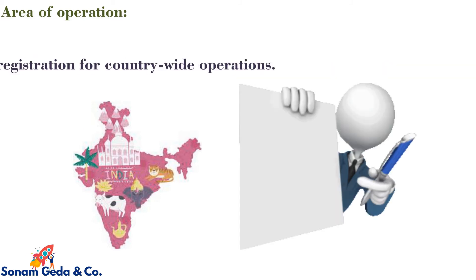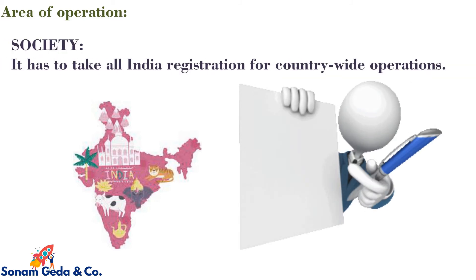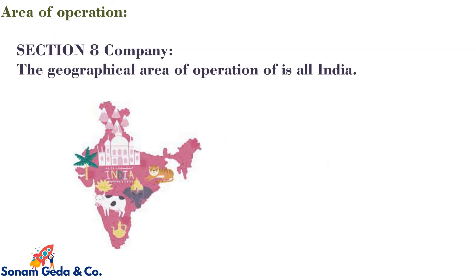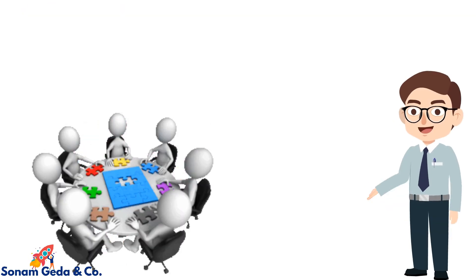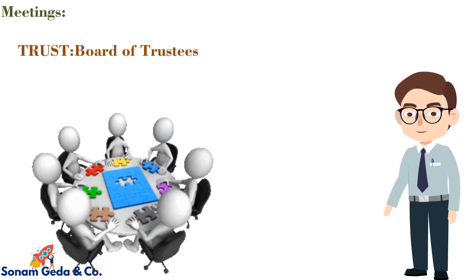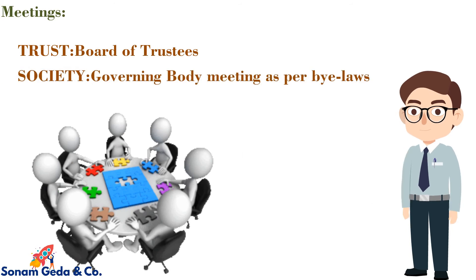Area of operation: in the case of a Trust the geographical area of operation is all India. In the case of a Society it has to take all-India registration for countrywide operations. In the case of a Section 8 Company the geographical area of operation is also all India.